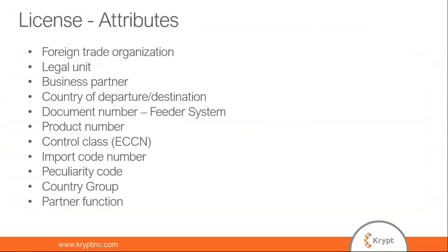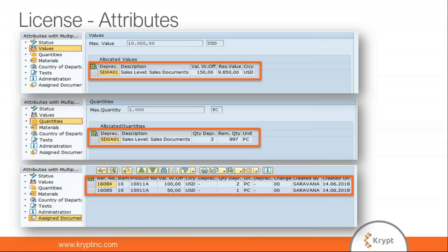License attributes include: FTO (company code), legal unit (plant), business partners, country of departure/destination, document numbers, product number, ECCN/product classification, import code number, peculiarity code, country group, and partner function. Based on these attributes, the license is maintained. For value tracking, the maximum value shows the license value, allocated value shows the depreciation amount, and the balance shows value remaining. Similarly, maximum quantity, depreciated quantity, and remaining quantity can be tracked. The assigned transactions show which sales orders utilized the license and how much value was written off.